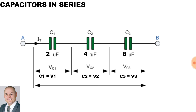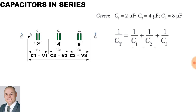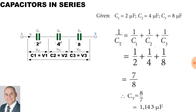To calculate the value of total capacitance when capacitors are connected in series, it's important to remember that capacitors in series behave like resistors in parallel. Here we have three capacitors in series with 2 microfarad, 4 microfarad, and 8 microfarad. Using the formula: 1 over C-total equals 1 over C1 plus 1 over C2 plus 1 over C3 — therefore 1/2 plus 1/4 plus 1/8 gives us 7/8. Inverting gives a total capacitance of 1.143 microfarad.